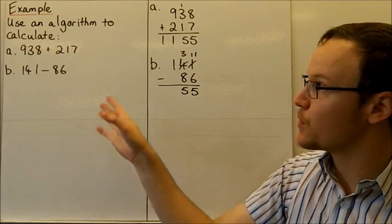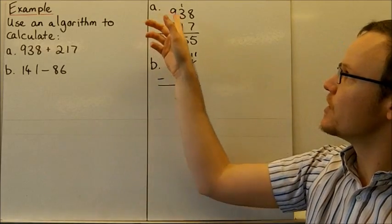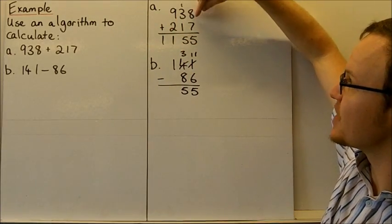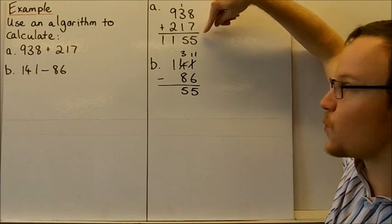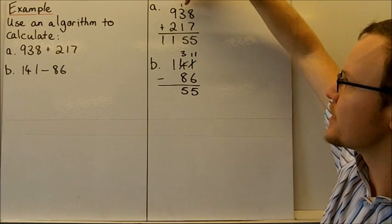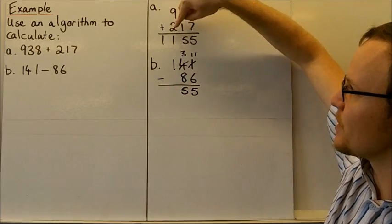Let's have a look at an example using algorithms to calculate an addition and subtraction. If we add 8 plus 7, that's 15. So we put the 5 down here, the 5 in the 1s, and carry the 1 ten over to the tens column. Then we have 1 plus 3 plus 1 is 5, and 9 plus 2 is 11. So the answer is 1,155.